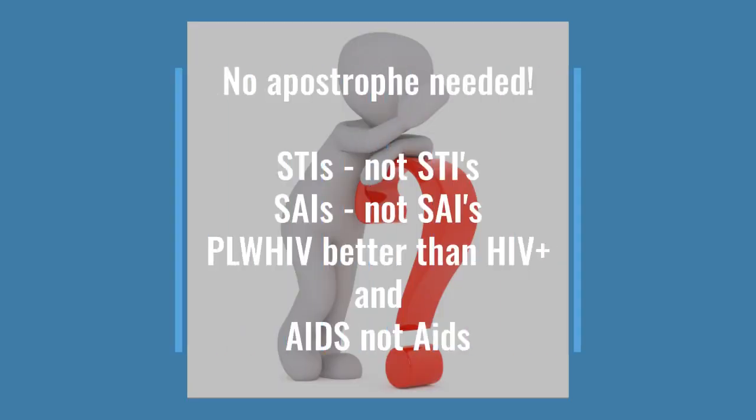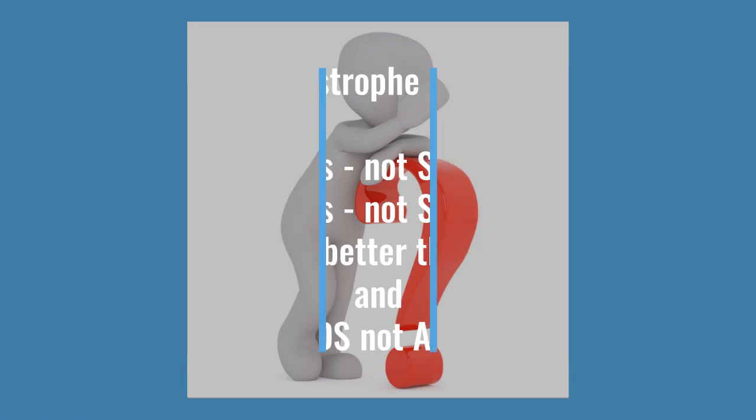A common error I see in many students' work is when they put an apostrophe in — that makes it the genitive case rather than simply just the plural. Also, in referring to people living with HIV, it's better to say PLWHIV rather than HIV positive. And in writing the acronym AIDS, always use full capitals.